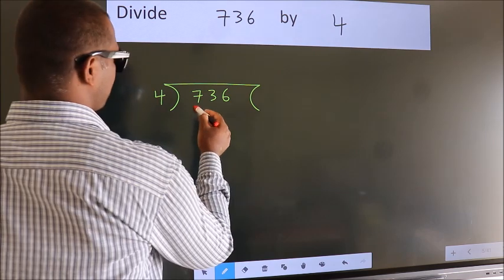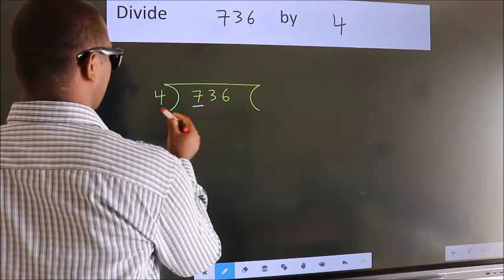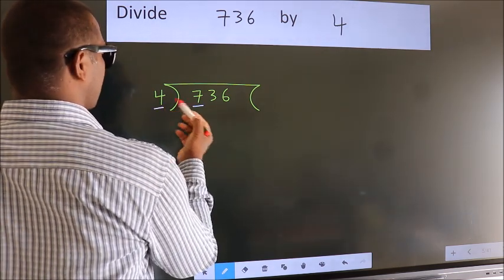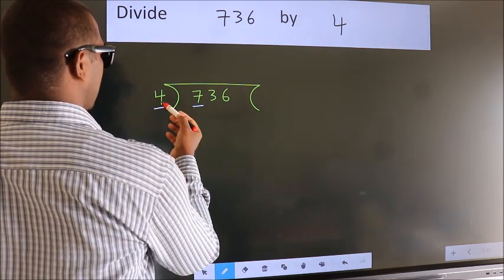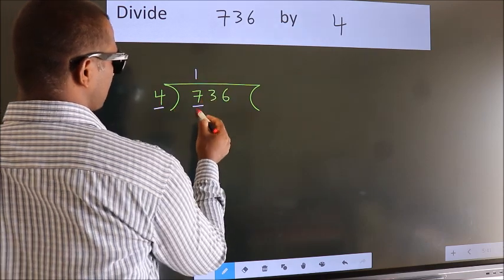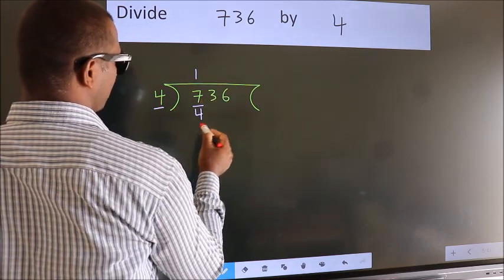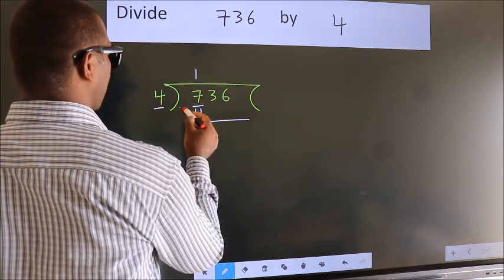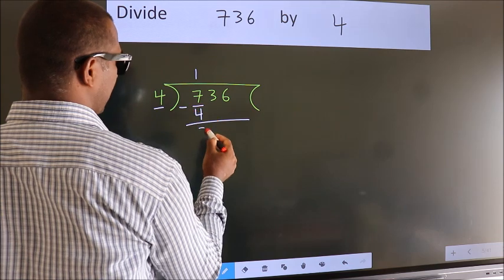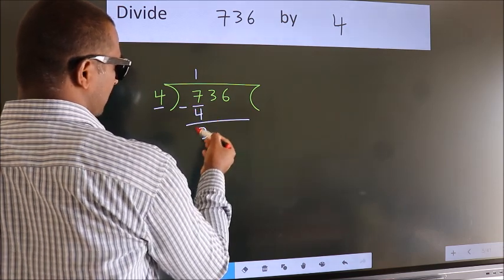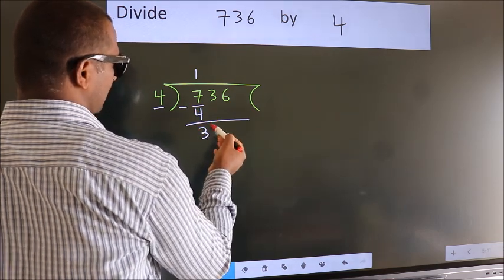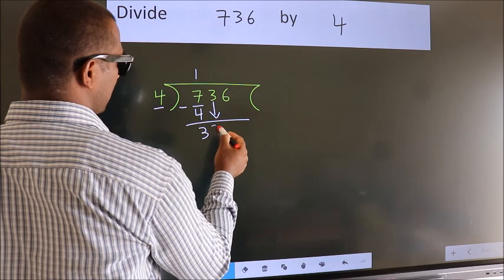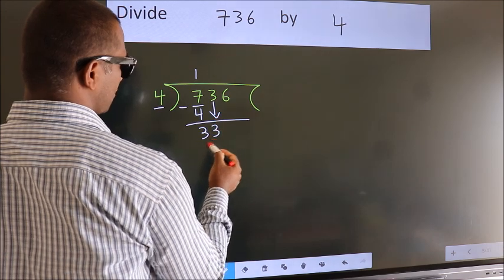Here we have 7, here 4. A number close to 7 in the 4 times table is 4 once, which is 4. Now we should subtract — we get 3. After this, bring down the beside number. So 3 comes down, giving us 33.